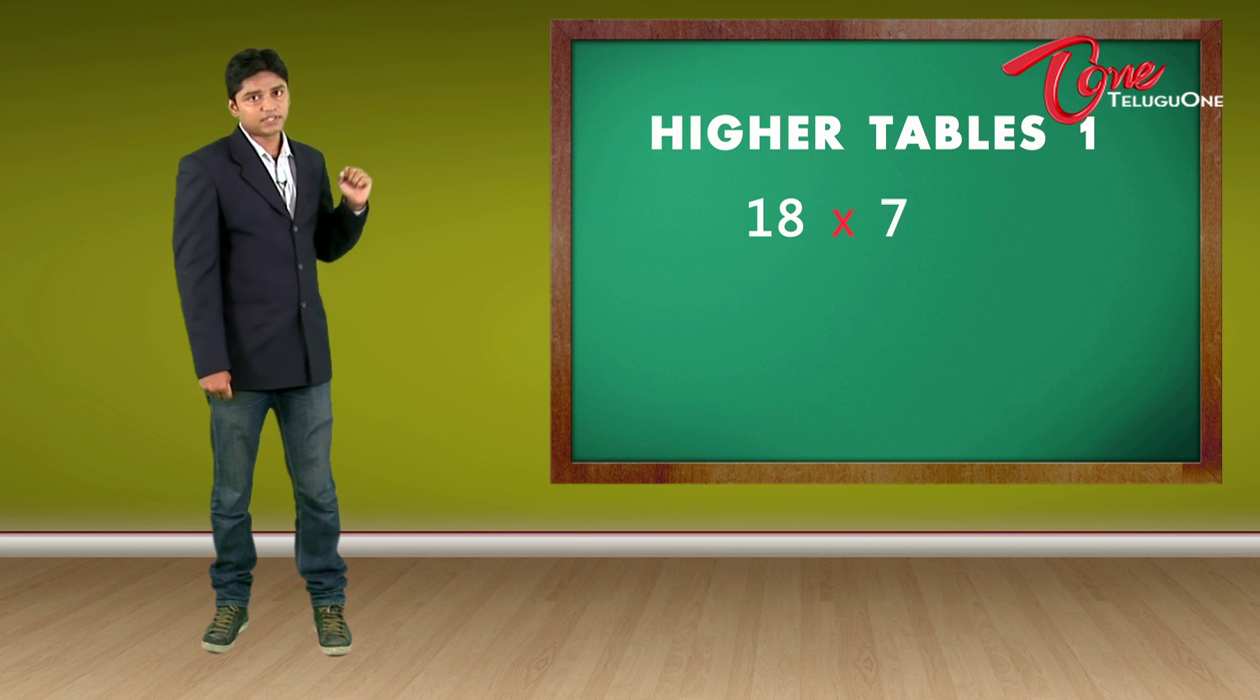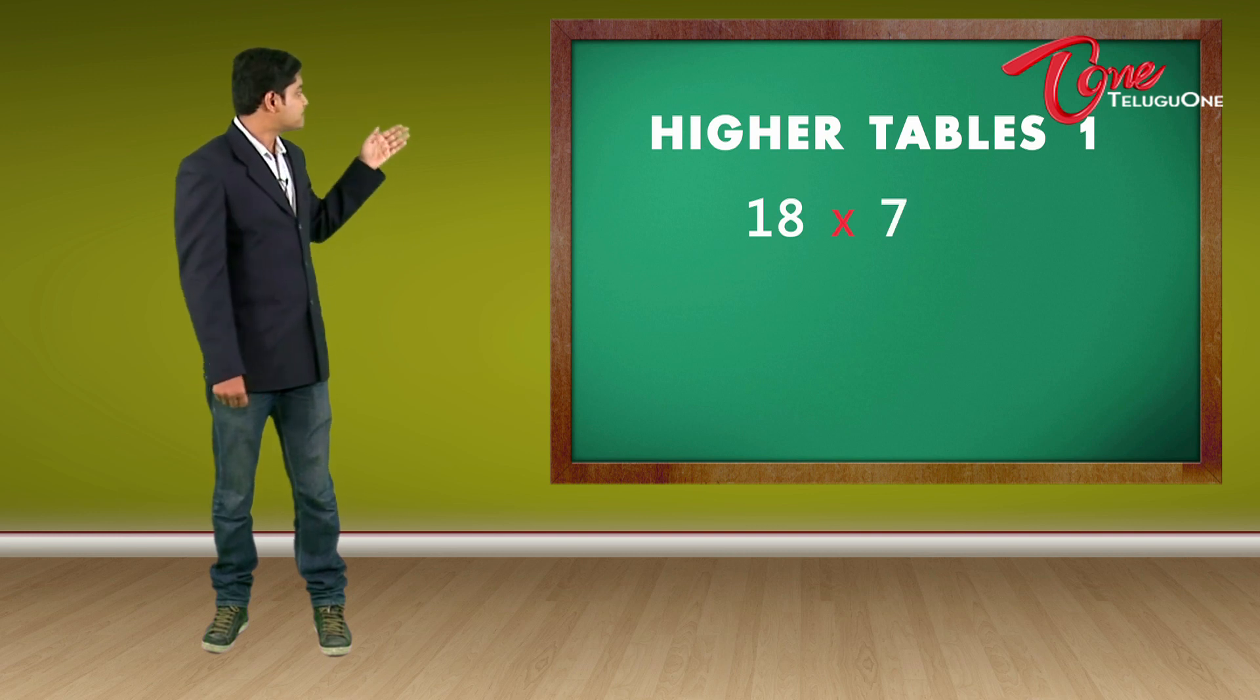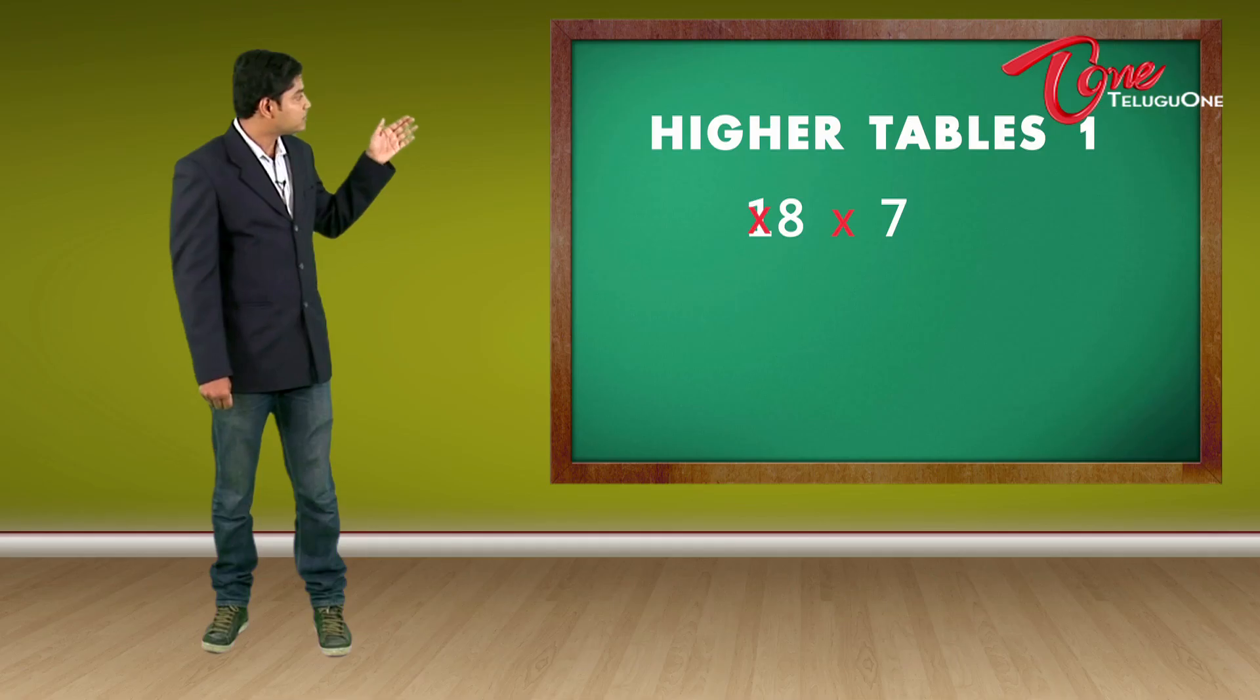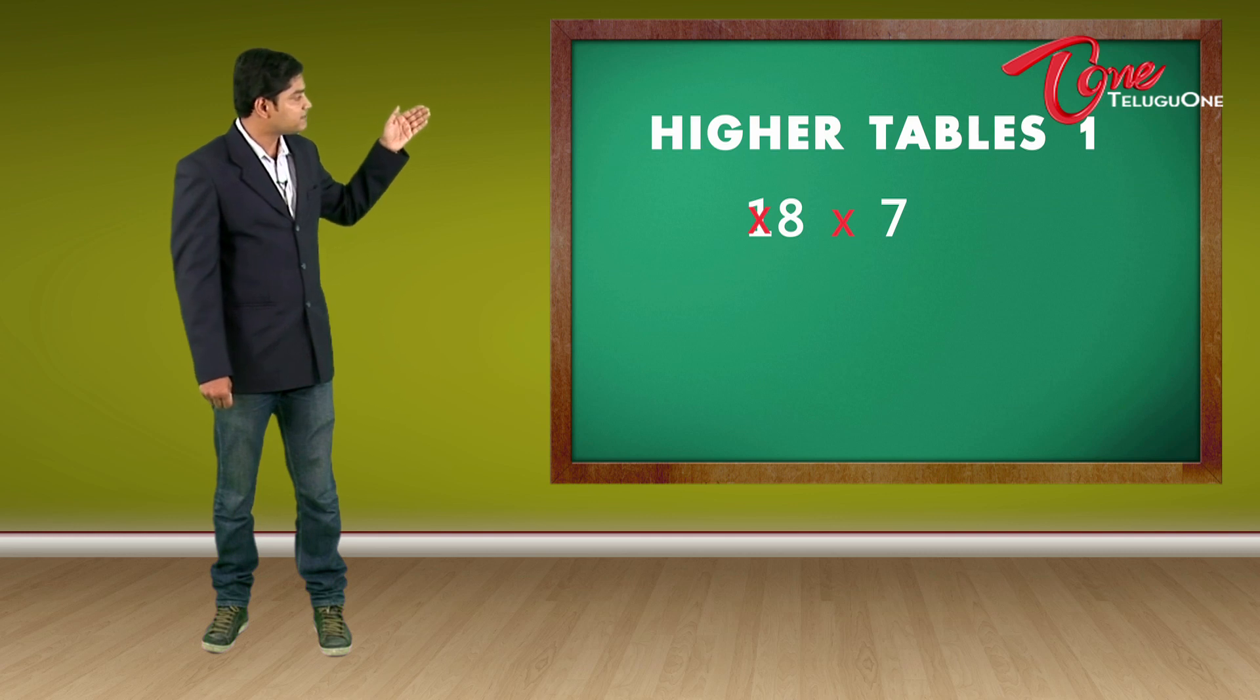18 times 7. So in 18 times 7, I am not going to use the first one. So my problem becomes 8 times 7. In the last video, we have learned how to calculate 8 times 7. 8 times 7 is 56. So I am going to write 56 in this way. 5 and 6.